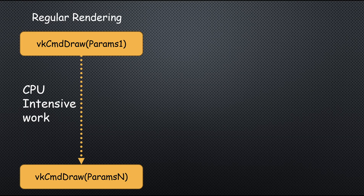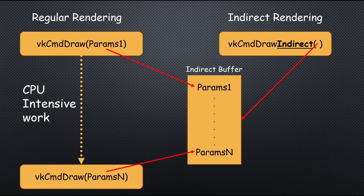Indirect rendering means that instead of issuing thousands of draw calls from the CPU, we can batch them into a single indirect command buffer and let the GPU handle culling, draw call generation, and resource selection dynamically.